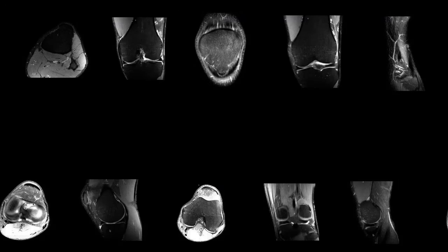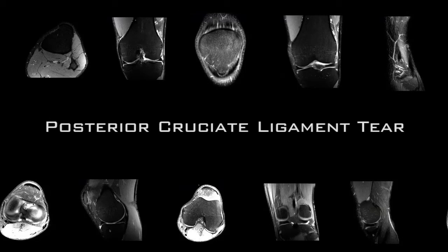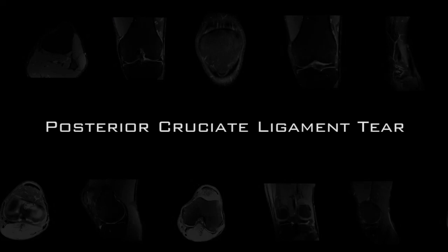The next thing we'll look at on MRIs is a PCL tear. We'll go through normal anatomy and then show what a PCL tear looks like on an MRI, including some of the secondary signs of a PCL tear. We'll go through an MRI of somebody who has an isolated PCL tear.